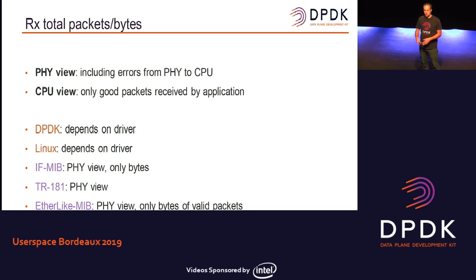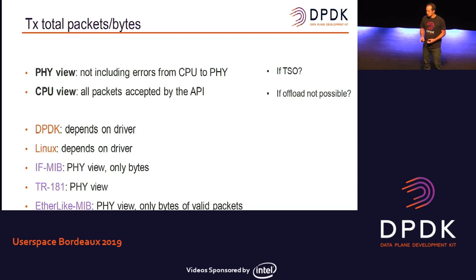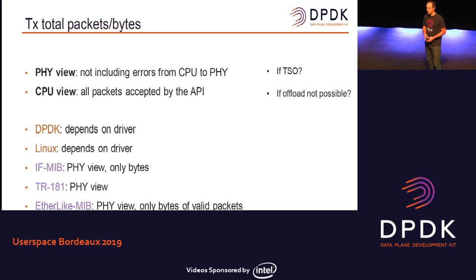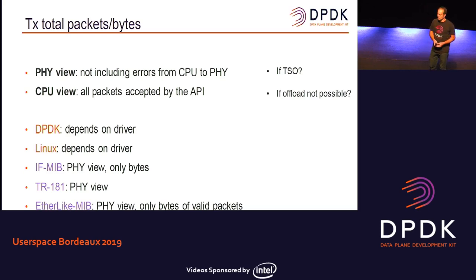I want to conclude on every statistic — there are a lot of open questions. There is someone in this room already looking closely at all these issues — David Marchand. He told me there are so many to define. For instance, what if we are sending some packets with TSO? Are we counting the original packet or the segments? What if there is some offload — what exactly are we counting? That's really hard to define, but clearly we need to do this work. There are different views, and in the standards I found only the RMON MIB getting the application view of things. But we just need to choose.